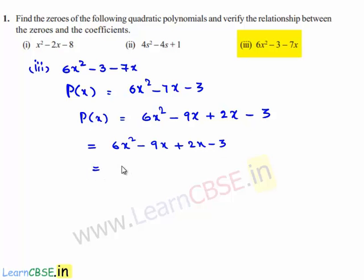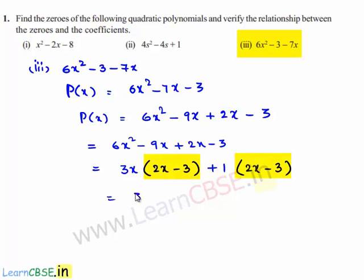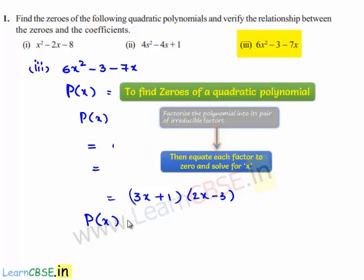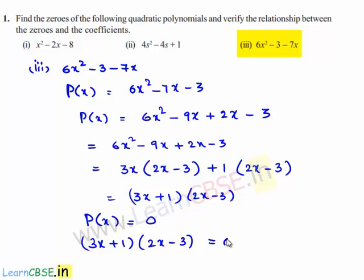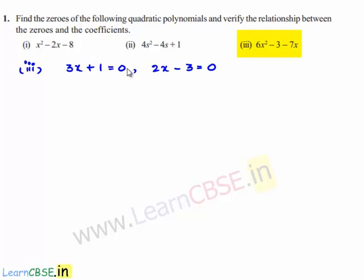We can take 3x as common: 3x times (2x minus 3), and here we can take 1 as common: 1 times (2x minus 3). This becomes (3x plus 1) times (2x minus 3). In order to find the zeros, we need to equate P of x to 0. We will be getting (3x plus 1) times (2x minus 3) is equal to 0. Therefore, 3x plus 1 equals 0 and 2x minus 3 equals 0.